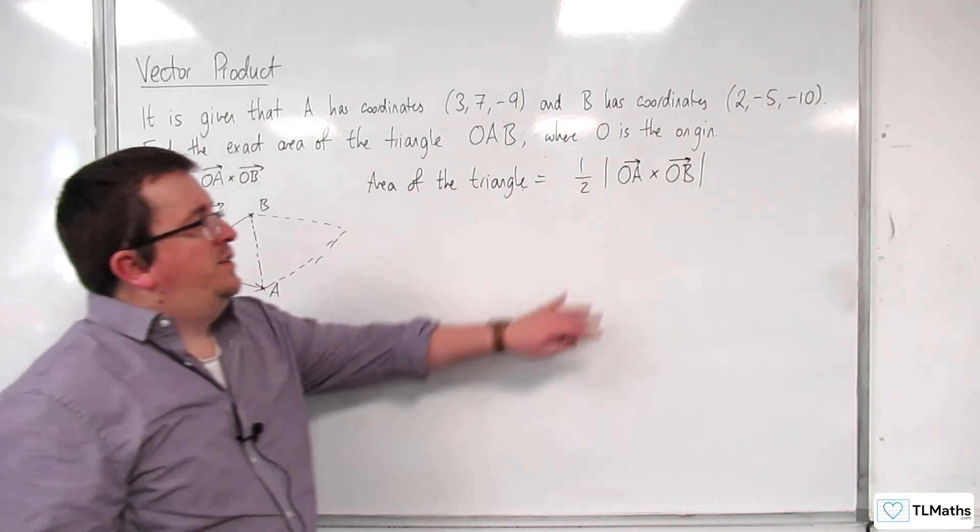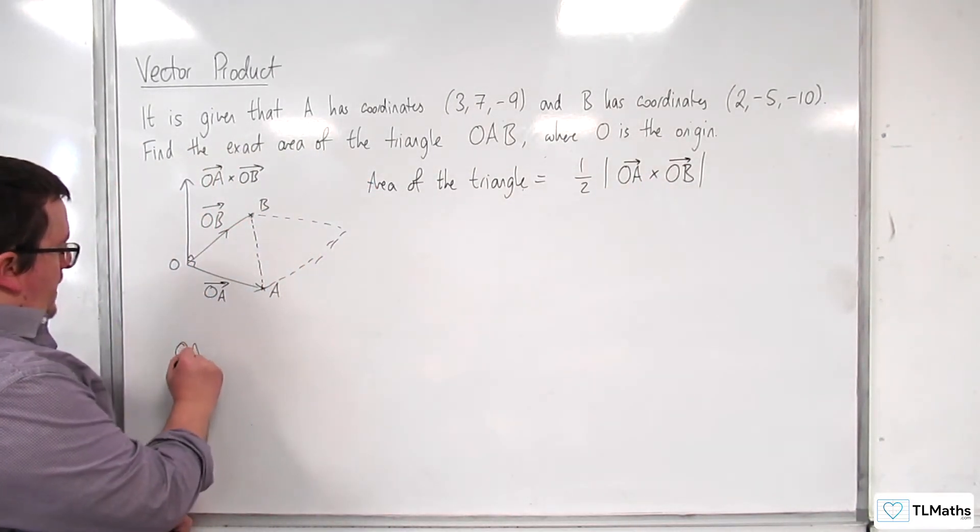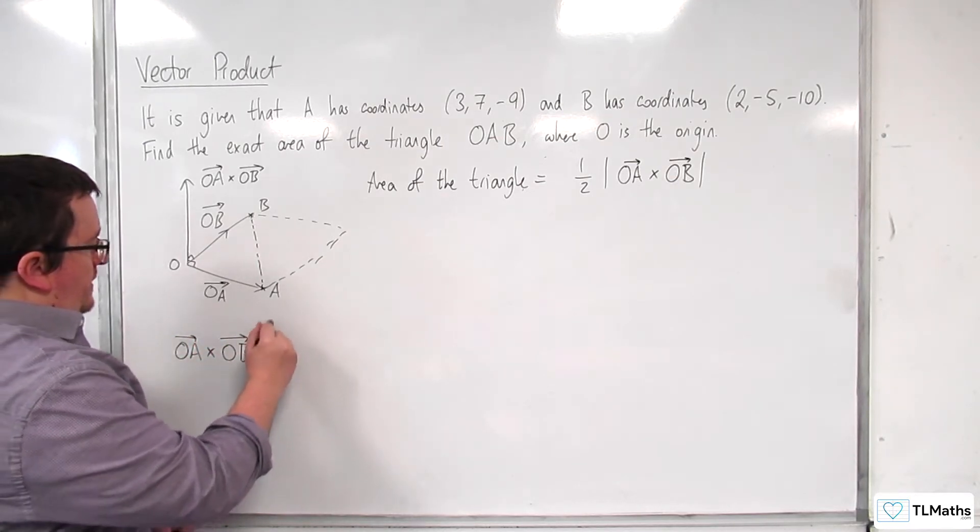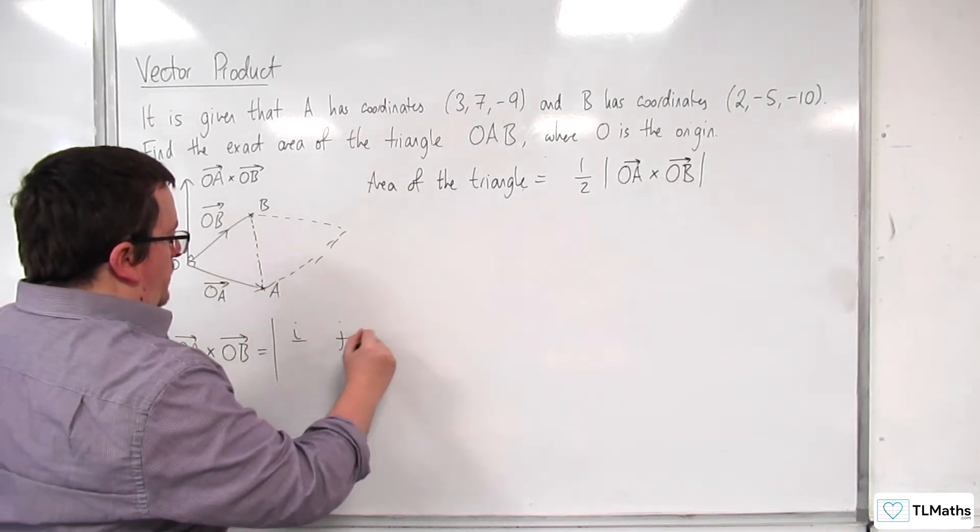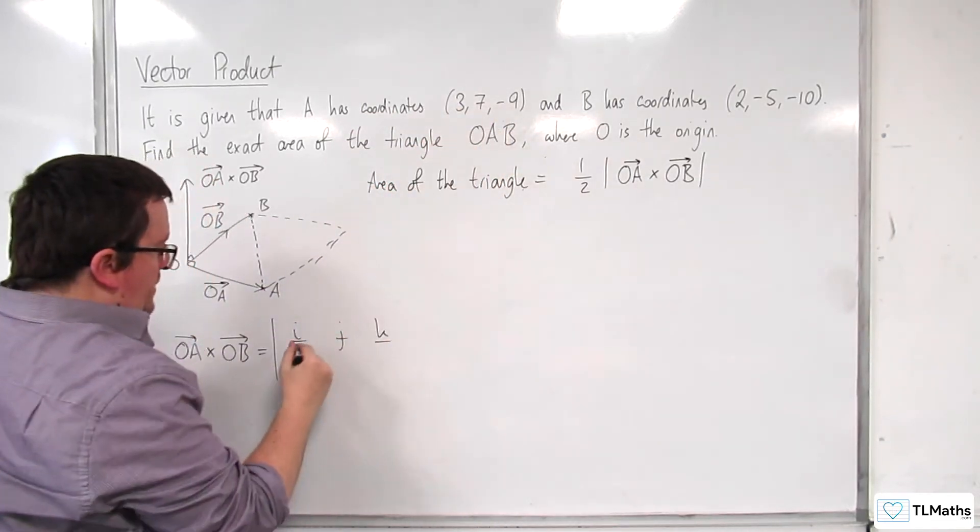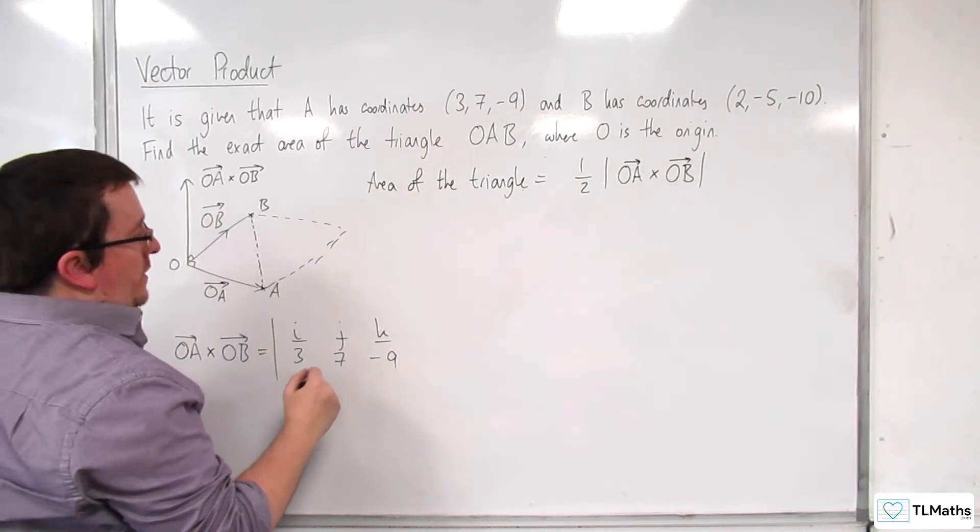So the first thing I need to do is work out OA cross OB. So OA cross OB is equal to... OA will be (3, 7, -9) and OB is (2, -5, -10).